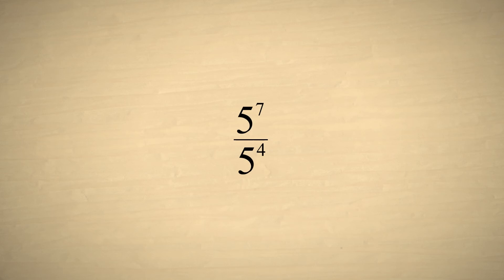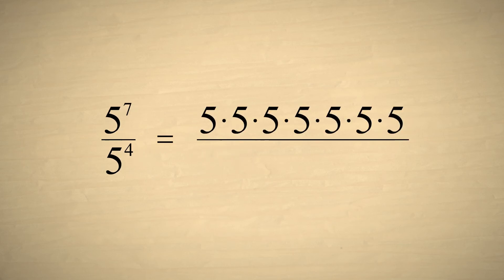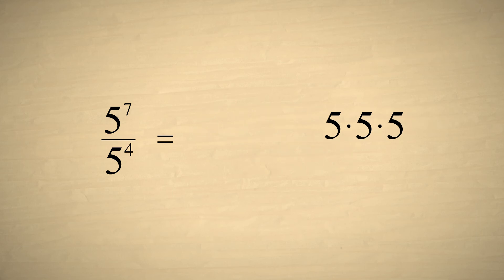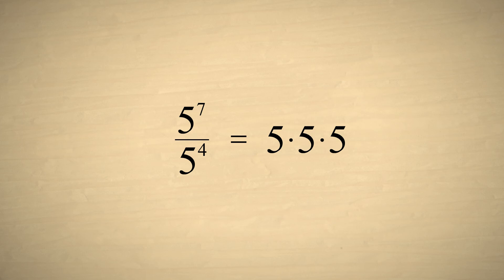But what happens if we divide two exponential expressions with the same base? Let's try as an example: five to the seventh power divided by five to the fourth power. This is the same as seven fives multiplied together divided by four fives multiplied together. We can simplify this fraction by cancelling four fives in the denominator and four fives in the numerator. After cancelling, we are left with three fives multiplied together. So five to the seventh power divided by five to the fourth power is five to the third power. Notice that we can get this result by subtracting the exponent of the denominator from the exponent of the numerator.